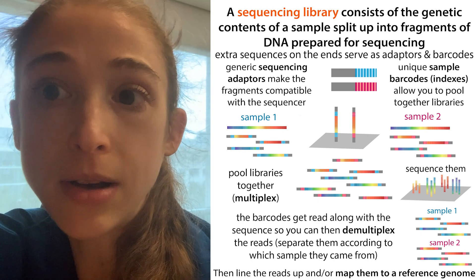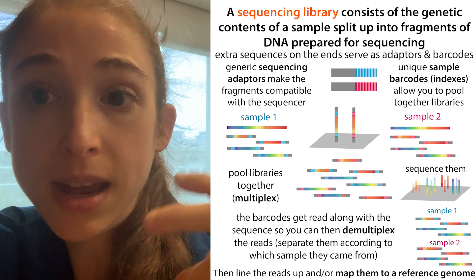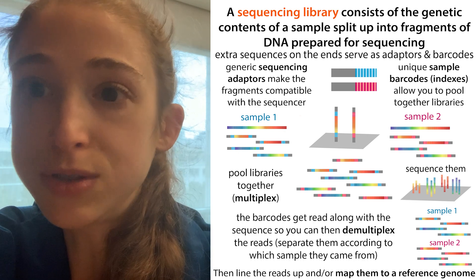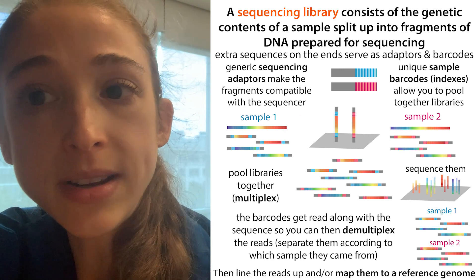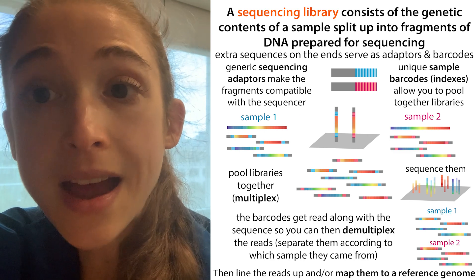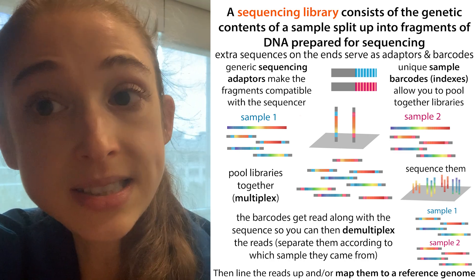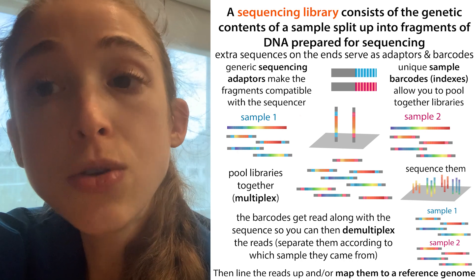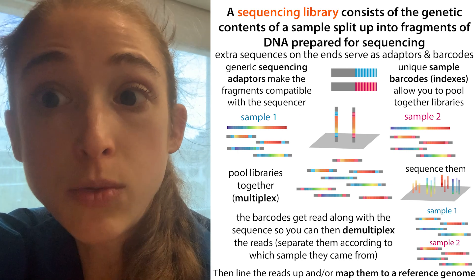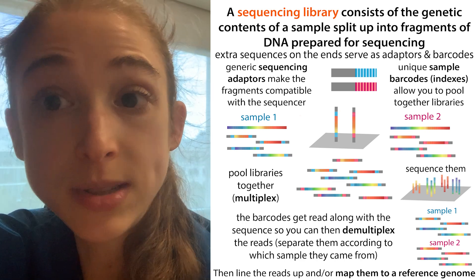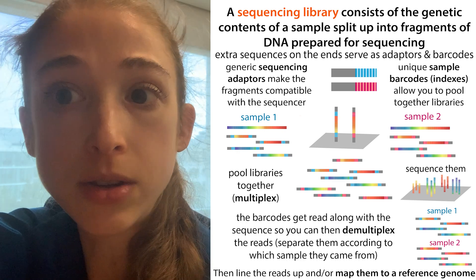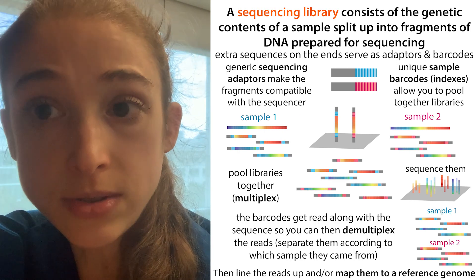By samples, we could be talking about a library made from a different cell type, or a different tissue, or some other unique sample. Each unique sample is going to have a unique barcode. When that sequence is stuck on that chip and getting copies made of it, you also make a copy of that barcode. This is going to be associated with the read, so now you know which barcode was associated with which read — and therefore which sample was associated with the read.